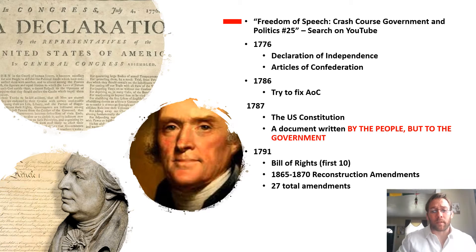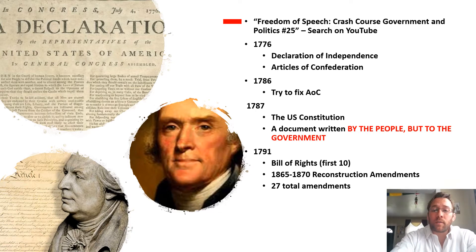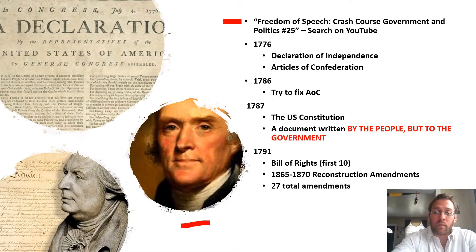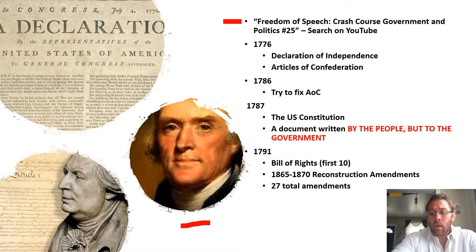Let's talk about the Constitution before we get specifically into the First Amendment. We need to go back to 1776, which is when the Declaration of Independence was written by Thomas Jefferson. America says it's going to be its own country, and then we need to form a government. The first government we form is under what are known as the Articles of Confederation.